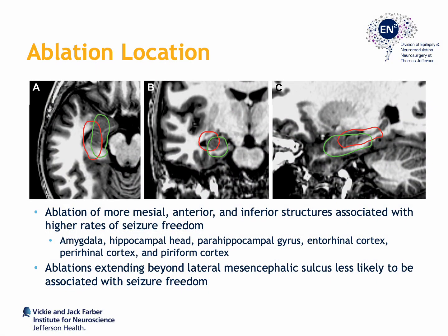Overall, our goal of laser ablation for mesial temporal lobe epilepsy involves ablation of the amygdala — particularly the mesial portions — hippocampal head, parahippocampal gyrus, entorhinocortex, pararhinocortex, and piriform cortex. In terms of the posterior extent, the ablation should carry to the level of the lateral mesencephalic sulcus, and ablations beyond this point should be performed with caution, particularly because there may be greater risk of inducing visual field deficits by involving portions of Mayer's Loop.